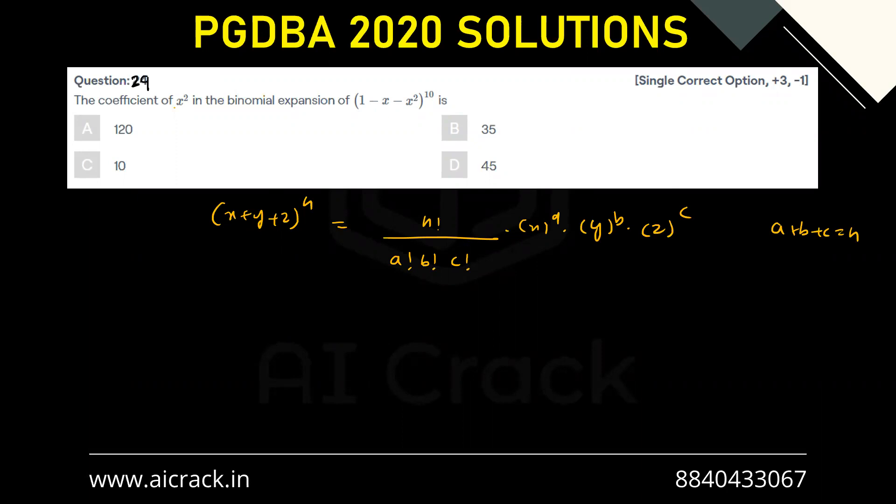Now if you want to generate x square, I'll be giving 8 powers to 1, 2 powers to minus x and 0 power to x square. This is how I have to distribute, or I'll be distributing 9 powers to 1, 0 power to minus x and 1 power to minus x square. So this is how we can generate the x square term and we have to add the coefficients for both of the terms.